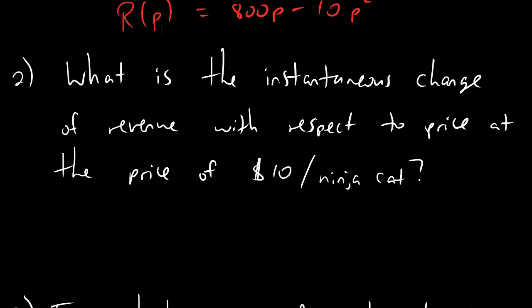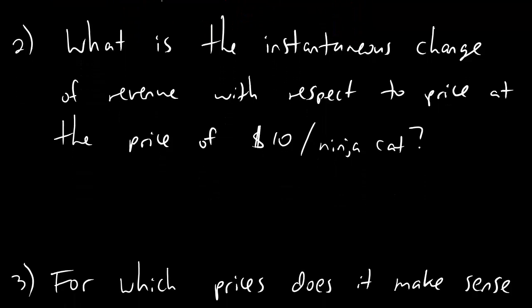Now let's check out number two. Number two says, what is the instantaneous change of revenue with respect to price at the price of $10 per ninja cat? Well first let's get rid of some of this annoying language.